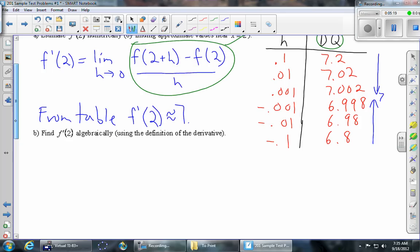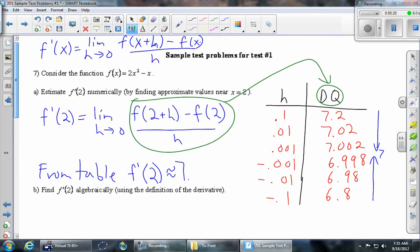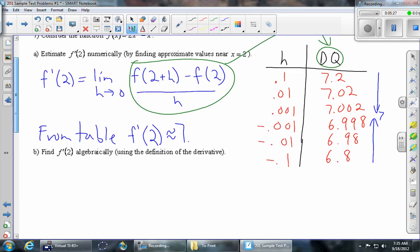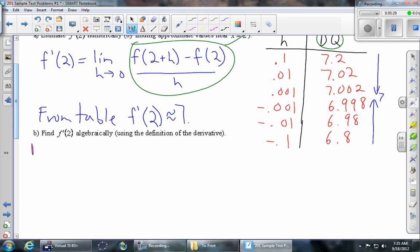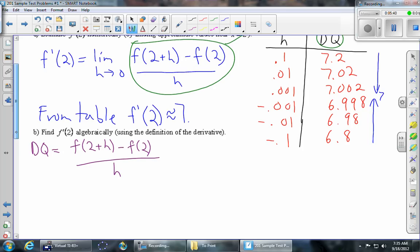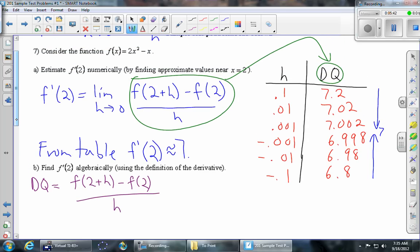Part B: Find f'(2) algebraically using the definition of the derivative. So here we're going to go back up to this green circled thing and do some calculations. So the difference quotient from the green circled thing: f(2 + h) - f(2) divided by h. And now we're not using the table or the calculator at all. We're just going to do some algebra based on the definition of f.